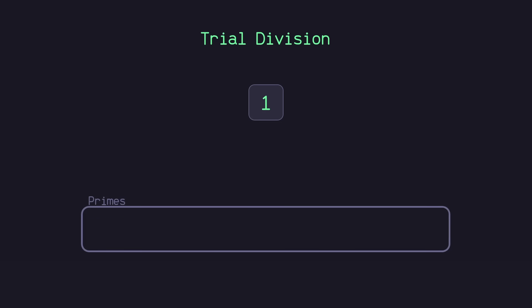One of the oldest of these algorithms is known as trial division. We're going to find all the prime numbers under 30. What's common amongst most prime-finding algorithms is that we skip 1 because 1 is not considered a prime number. So let's move on to 2. The trick for this algorithm is for each number, we want to check if it's a multiple of any of our currently found prime numbers. We haven't found any primes yet, so 2 is not a multiple of any of our primes, so we add it to the list. Next, we move on to 3 — 3 is not a multiple of 2, so we add it to our list of primes.